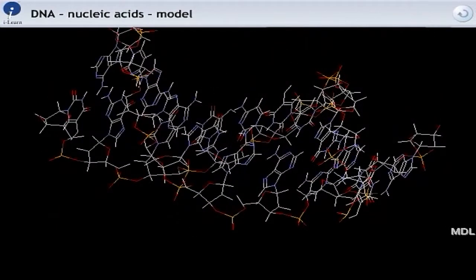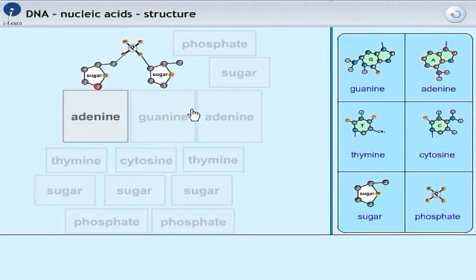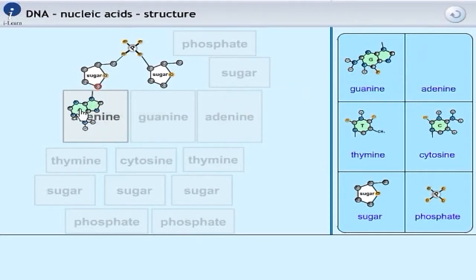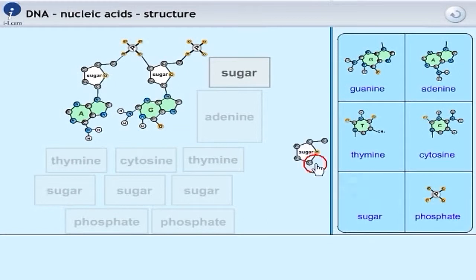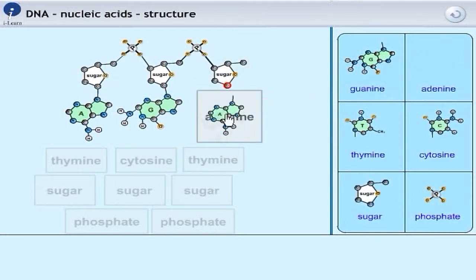We'll just bear that in mind for a second and we'll have a closer look at how DNA is put together. Now those oranges and red things that we saw are actually sugars and phosphates. And the sugar and the phosphate make up a kind of backbone for this chemical.